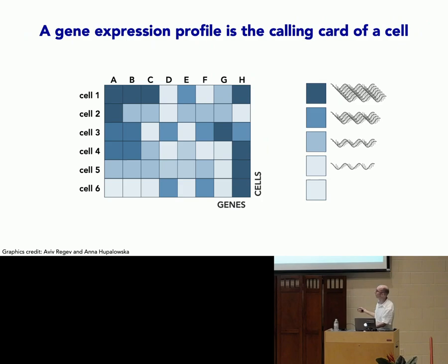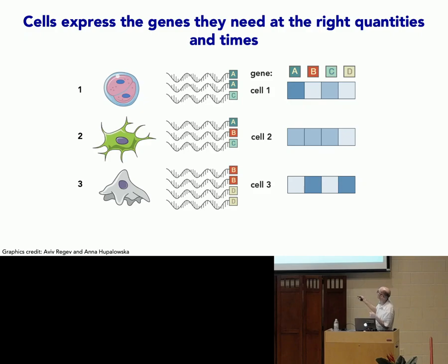It's not just the information about the transcripts that are used to create proteins — it's the proteins themselves and lots of other molecules that exist that are different. So gene expression is one important component of why cells are different.